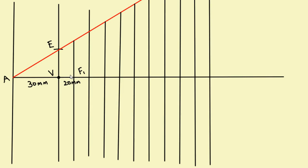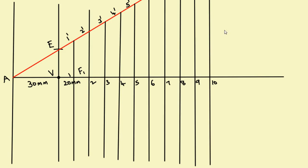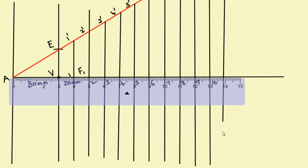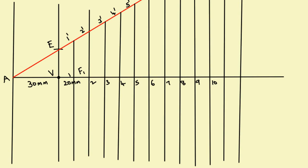Now name all the points on these vertical lines. V and F1 are already named. The remaining ordinate lines are named 1 and 1 dash, 2 and 2 dash, 3 and 3 dash, 4 and 4 dash, 5 and 5 dash, 6 and 6 dash, 7 and 7 dash, 8 and 8 dash, 9 and 9 dash, 10 and 10 dash, 11 and 11 dash, 12 and 12 dash.